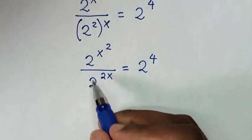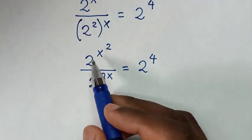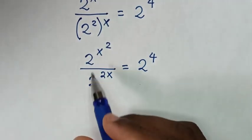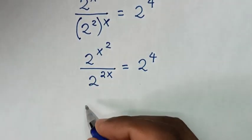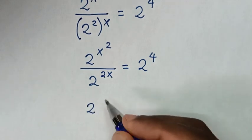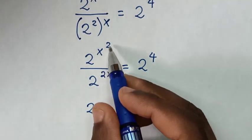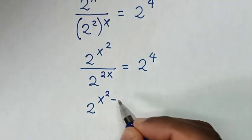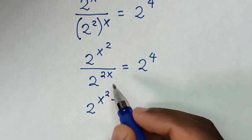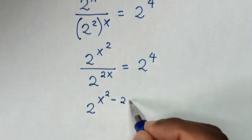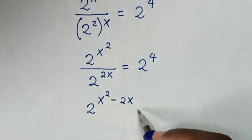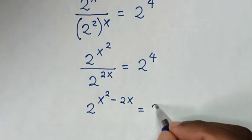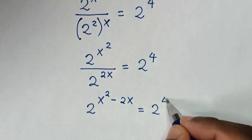Here we have division of exponents with the same base of 2. So it will be 2 power of x squared, then minus the power of 2x, is equal to 2 power of 4.